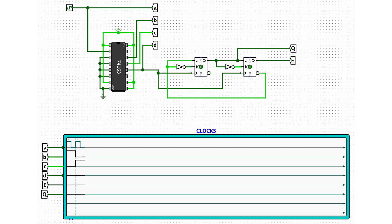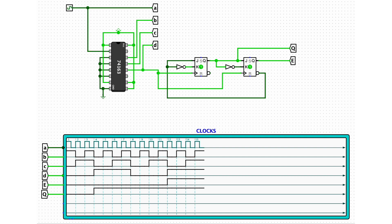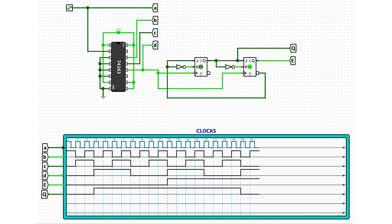When I start the simulation, we can see the counter dividing the oscillator frequency down, and then we can see how Q leads E by one-quarter of a cycle. If we wait a little bit, we can observe that both E and Q are one-quarter of the frequency of D.